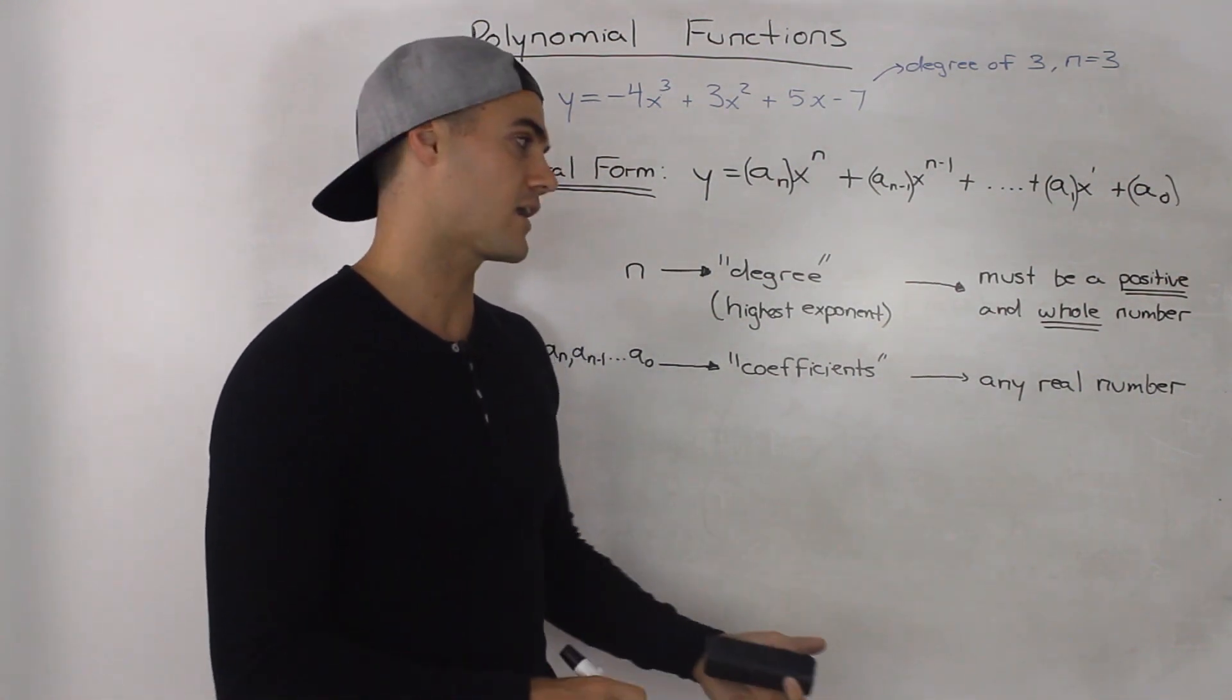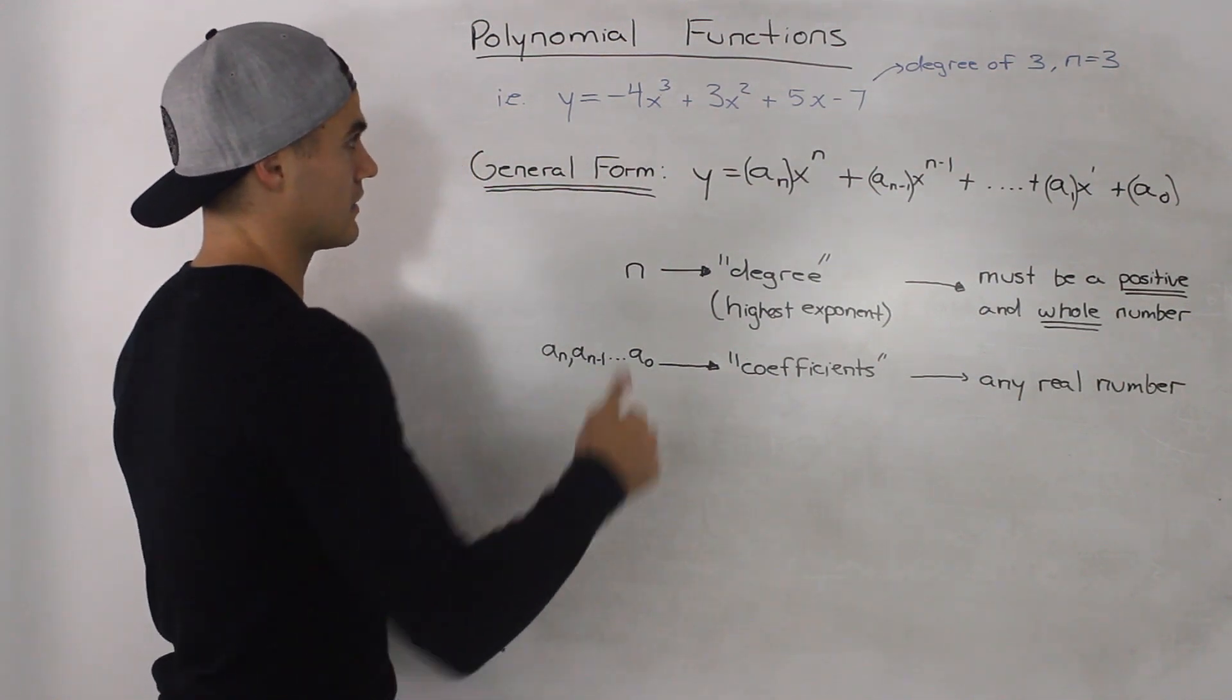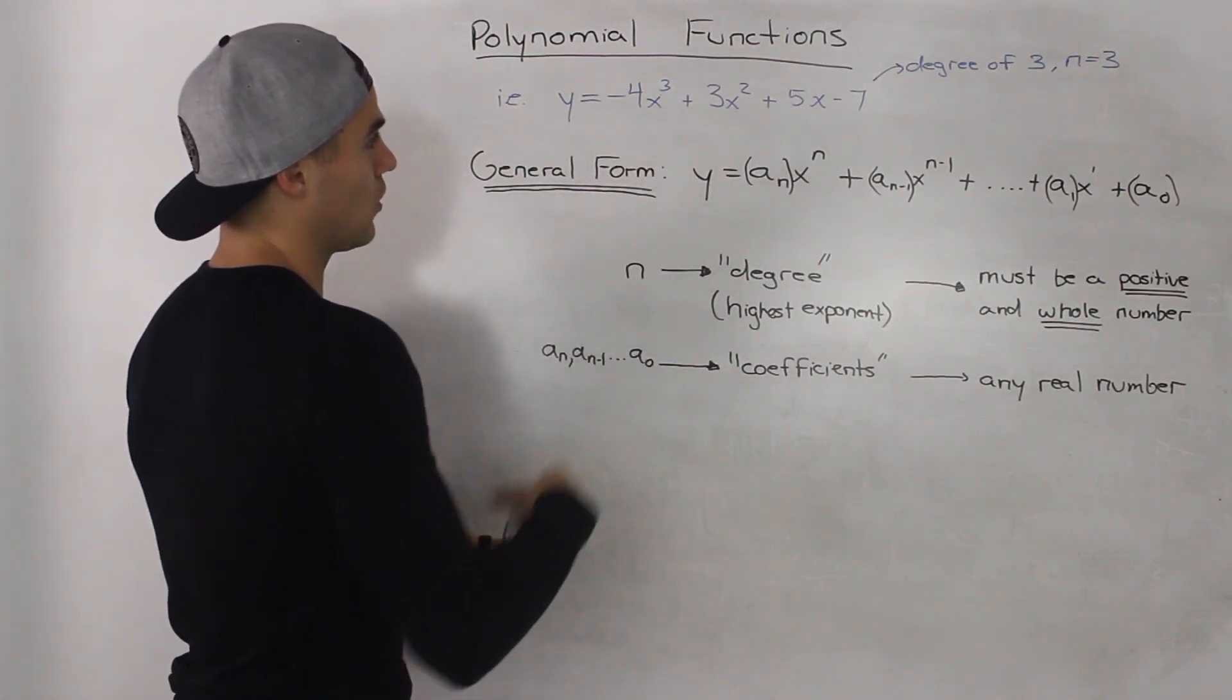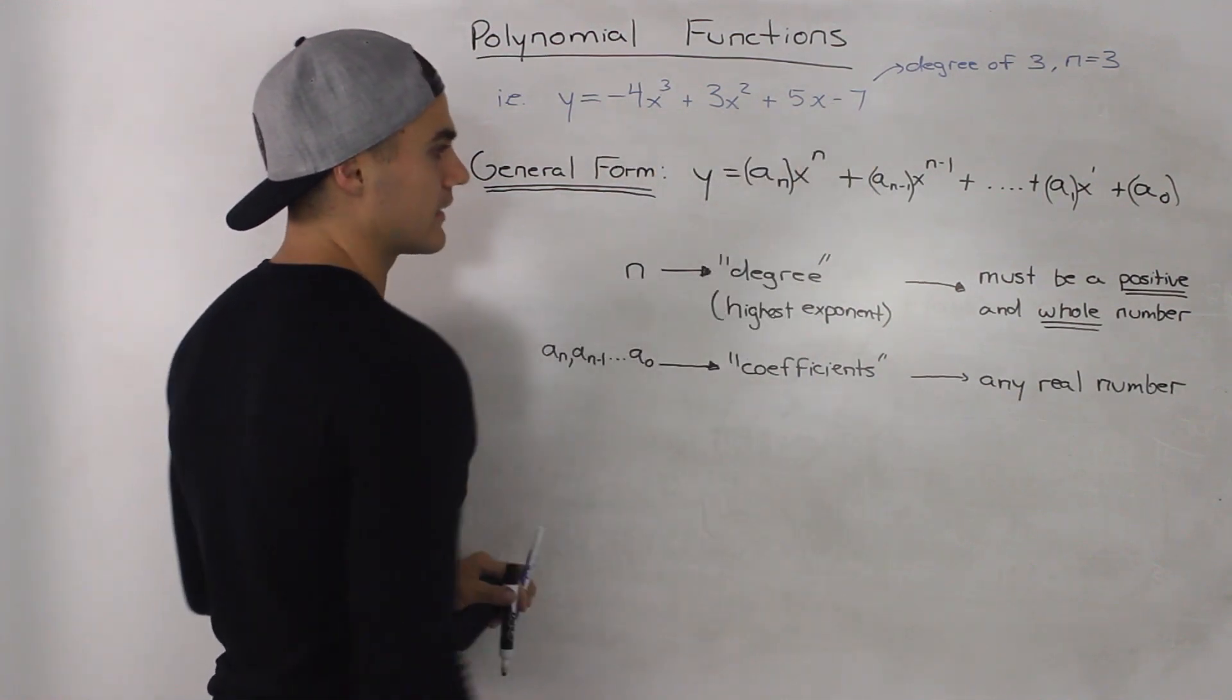So they can be positive, negative, they can be decimals, they can be whole numbers. So in our example, the coefficients are negative 4, 3, 5, and negative 7.